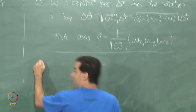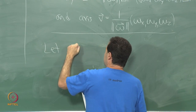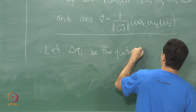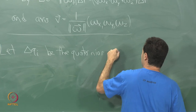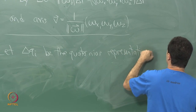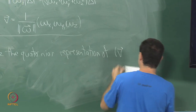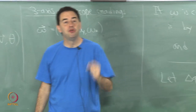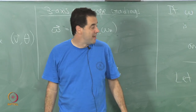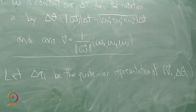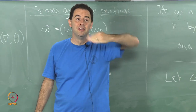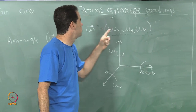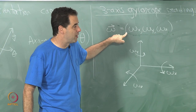I can now define delta-q_i as the quaternion representation of axis v_i and angle delta-theta_i at step i. In the 2D case I just talked about delta-theta_i, but in 3D I also have to recover the axis v_i in addition to the amount of rotation. Luckily, the three-dimensional gyroscope — if it provides a perfect reading — gives me the three components I use to directly construct the axis.